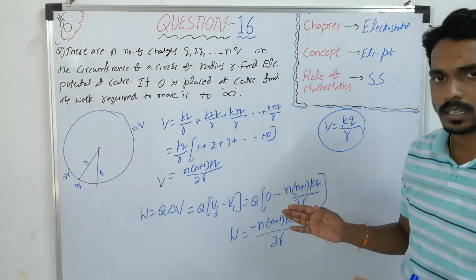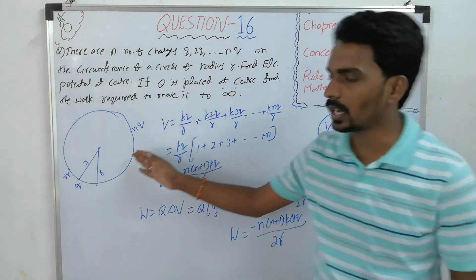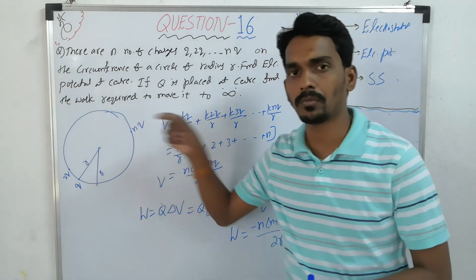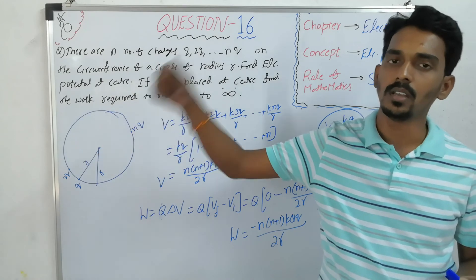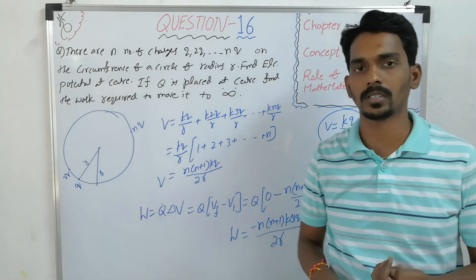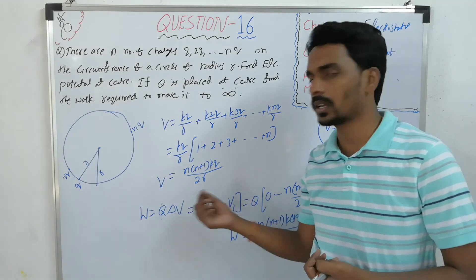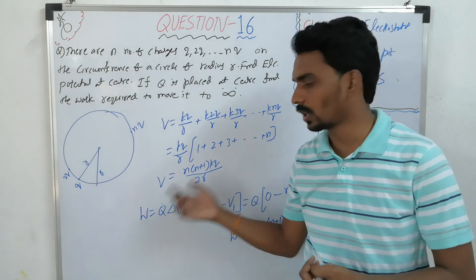So here you have to find the work done in moving a charge from one point to infinity. So final potential minus initial potential. Charge times potential difference equals work done.